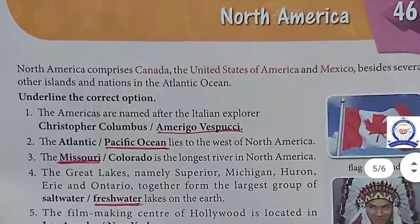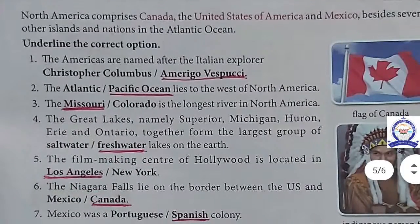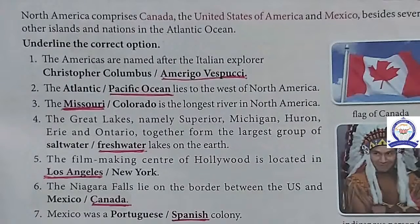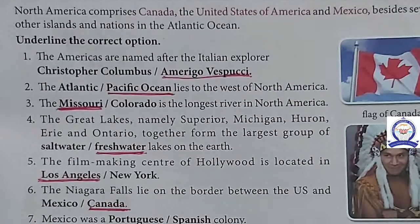North America is given — some important rivers and places in North America. The first one: the Americas are named after the Italian explorer Amerigo Vespucci. The Pacific Ocean lies to the west of North America.